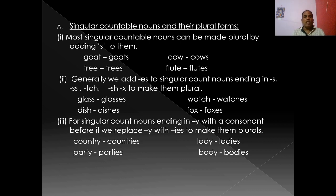So, singular countable nouns and their plural forms. Most of the singular countable nouns can be made plural by adding S to them. For example: boy/boys, goat/goats, cow/cows, tree/trees, flute/flutes, bed/beds, pen/pens. We can make plural by simply adding S.